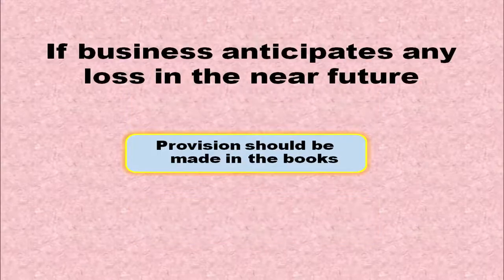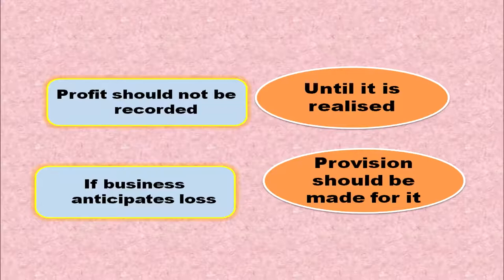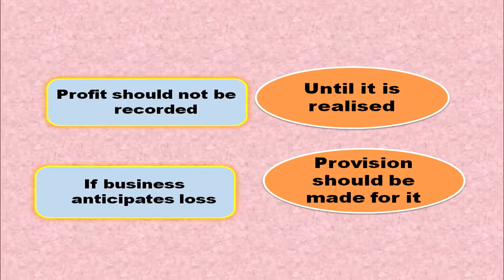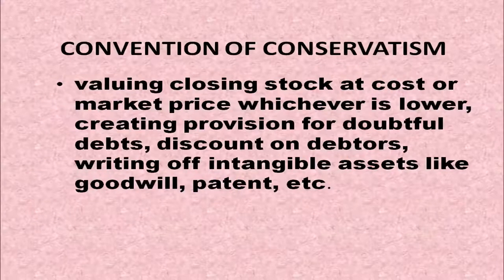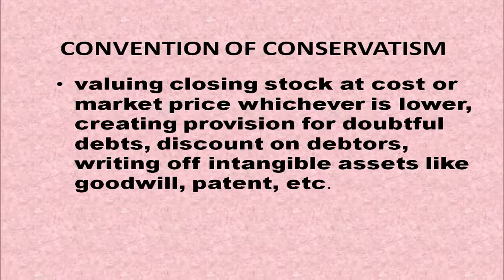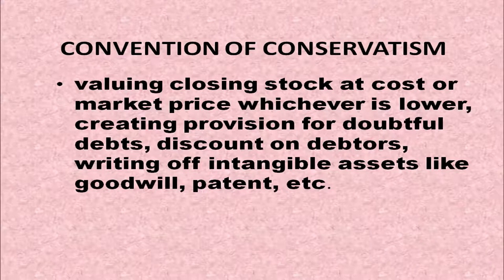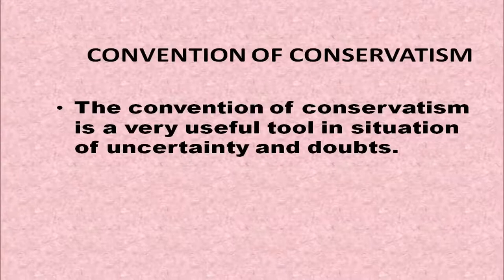If a business anticipates any loss in the near future, provision should be made in the books of accounts. Profit should not be recorded until it is realized. If a business anticipates loss, provision should be made for it. Valuing closing stock at cost or market price, whichever is lower, is done on the basis of the Convention of Conservatism. We also create provision for doubtful debts, provide discount on debtors, and write off intangible assets because of this convention.